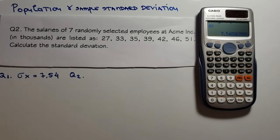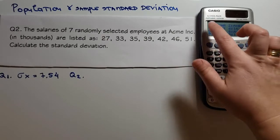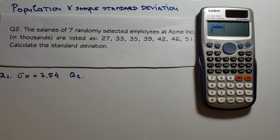Again, we need to go and insert the data in our calculator. We go to mode, we choose 3 and we choose 1 for one variable. And we insert 27 equal, 33 equal.